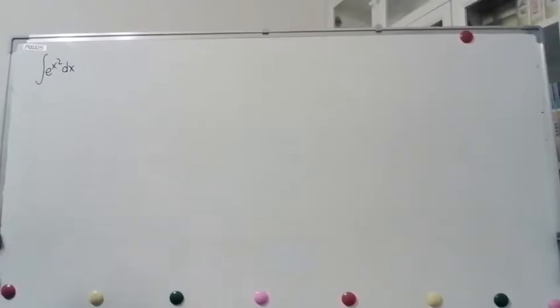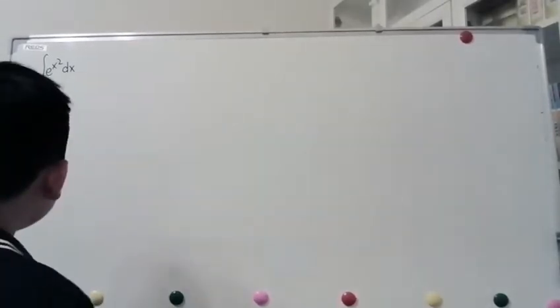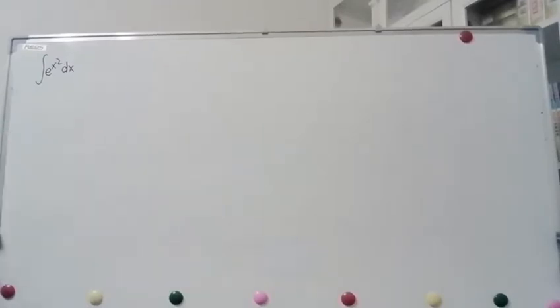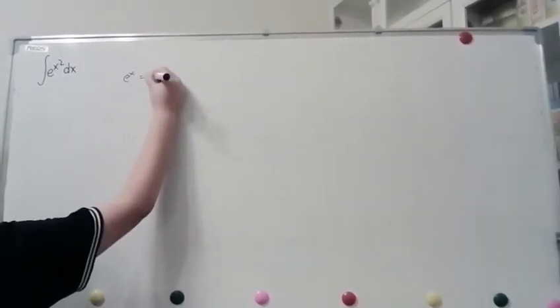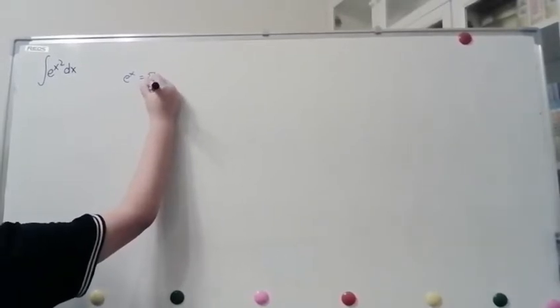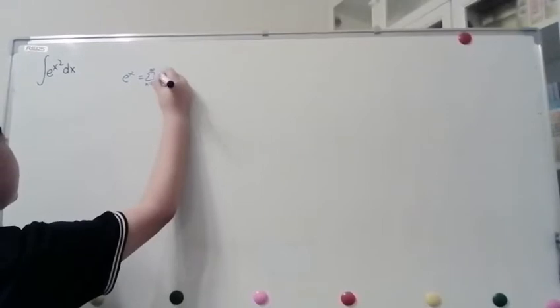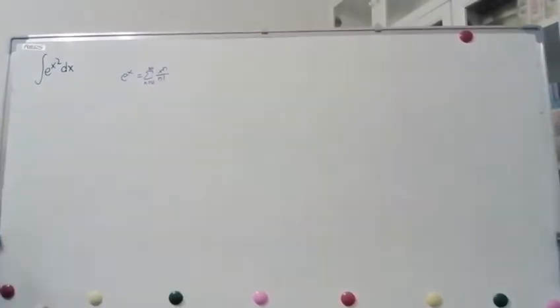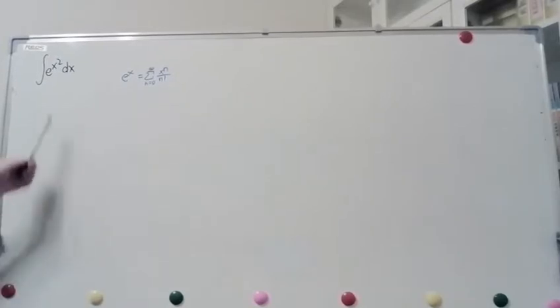So, let's look at it a different way. e to the x squared. Think of how you write e to the x as a power series. Basically, the sum n equals 0 to infinity of x to the n over n factorial. This is how you write e to the x, but we're not dealing with x in this case, we're dealing with x squared.